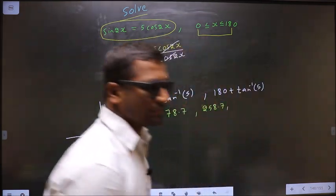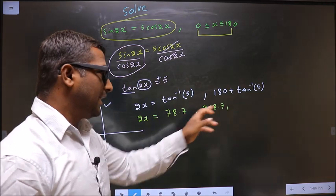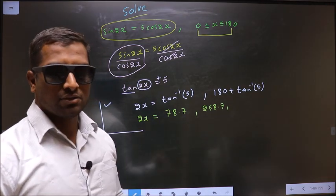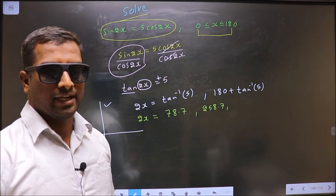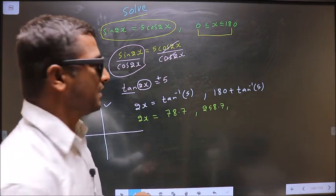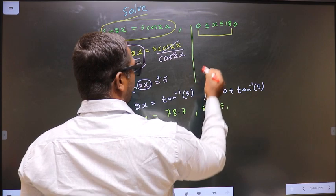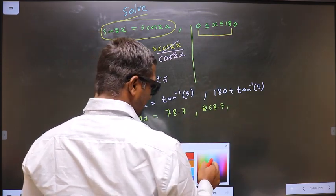Now, the question arises, shall I get another more values for 2x or not? How do we decide based on this one? See, here x lies from 0 to 180 degrees.